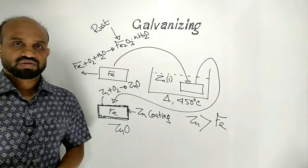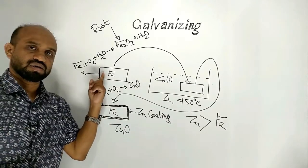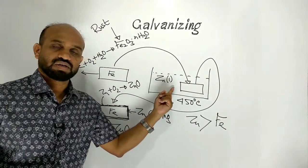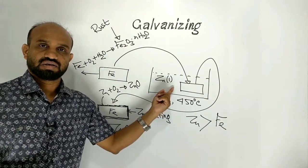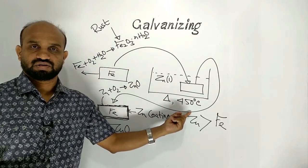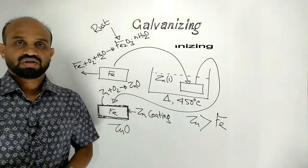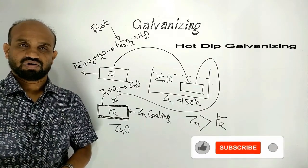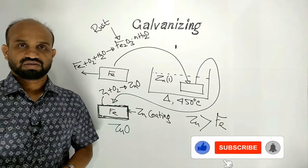In this process article made up of iron is dipped in liquid zinc, which is at the temperature 450 degree Celsius. That is why it is known as hot deep galvanization or hot deep galvanizing.